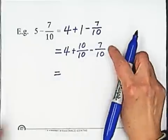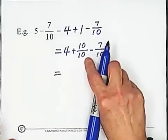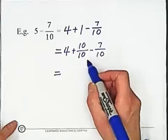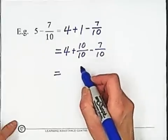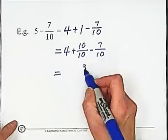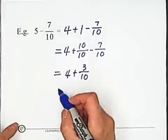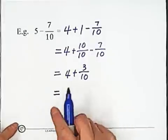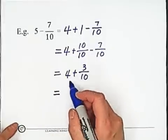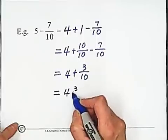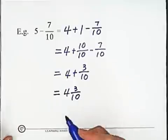So subtract the given fraction from the equivalent fraction. 10 over 10 minus 7 over 10 equals 3 over 10. So 3 over 10. And this force still carry on. Then the last step, add this to whole number with fraction, which is 4 and 3 tenths.